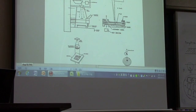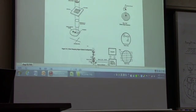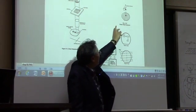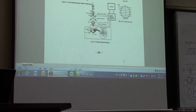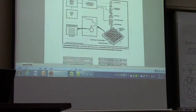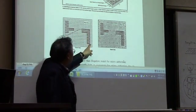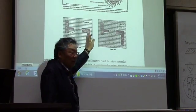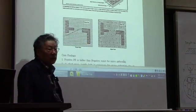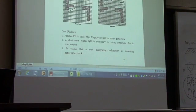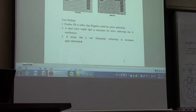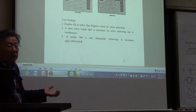The e-beam system requires directly writing patterns on the PR. The real problem with e-beam is that if you want to expose a block area, you have to scan the e-beam across the entire region, which is very time consuming. The throughput becomes very poor with e-beam lithography, so e-beam lithography is commonly used only in laboratories.